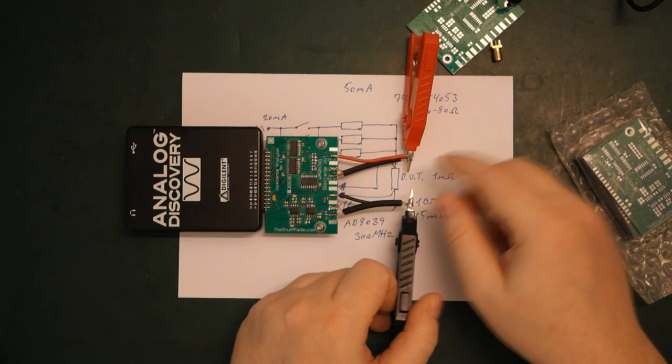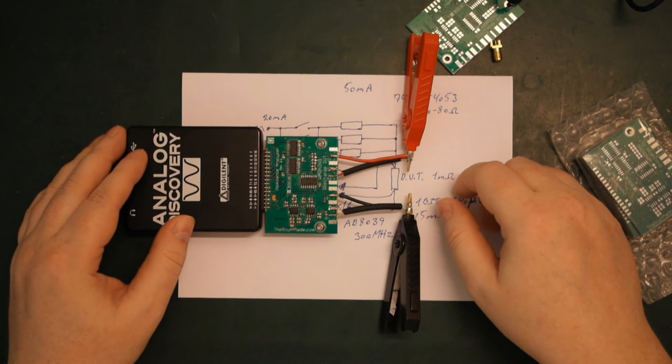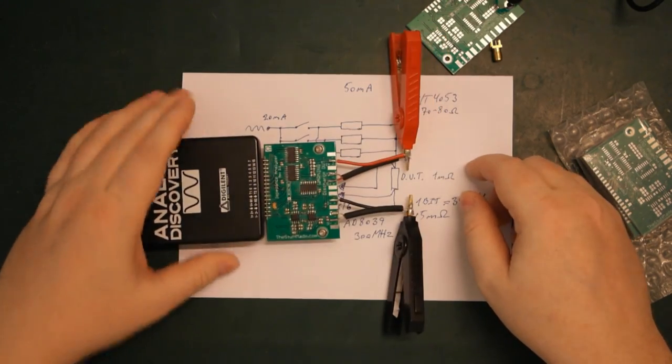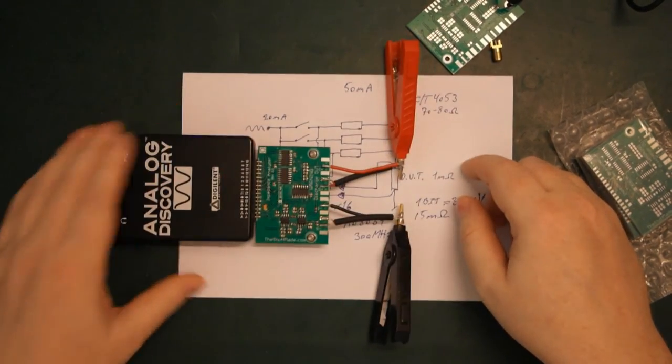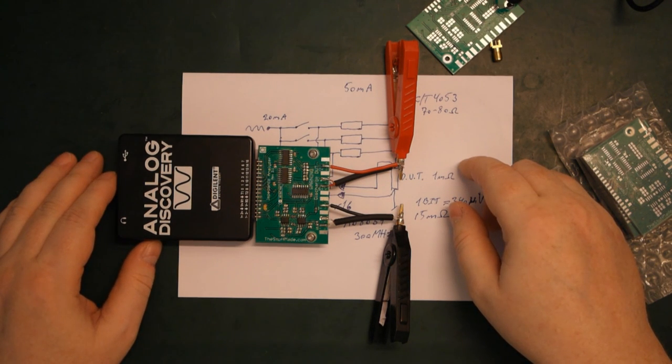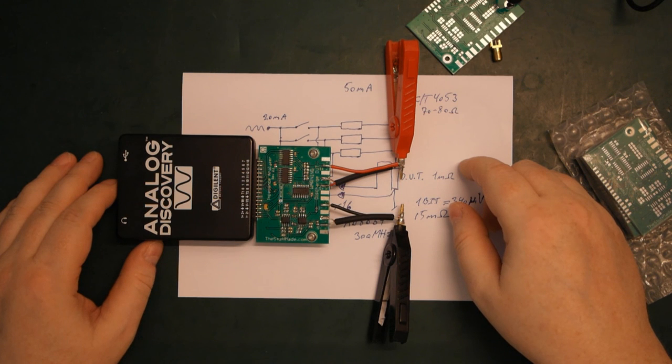It's also limited in how much it can actually remove by calibration. So best results with very short connections here. In most cases, that's not a problem because it's not a huge instrument. You can just move the thing around if you need to measure something in circuit.